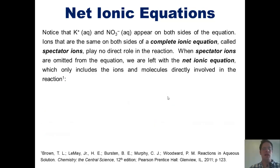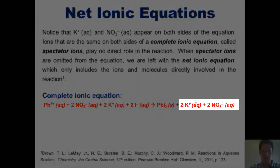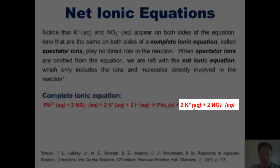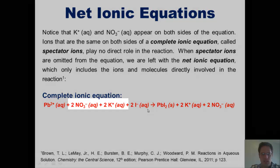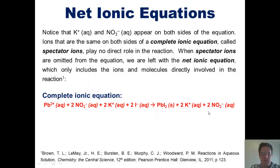Notice that K⁺ and NO₃⁻ appear on both sides of the equation. K⁺ is on the right side, and NO₃⁻ is on the right side as well. There is also a K⁺ and an NO₃⁻ on the left side with the exact same coefficients. Ions that look exactly the same on both sides of the complete ionic equation are called spectator ions, and they do not play any direct role in the reaction.